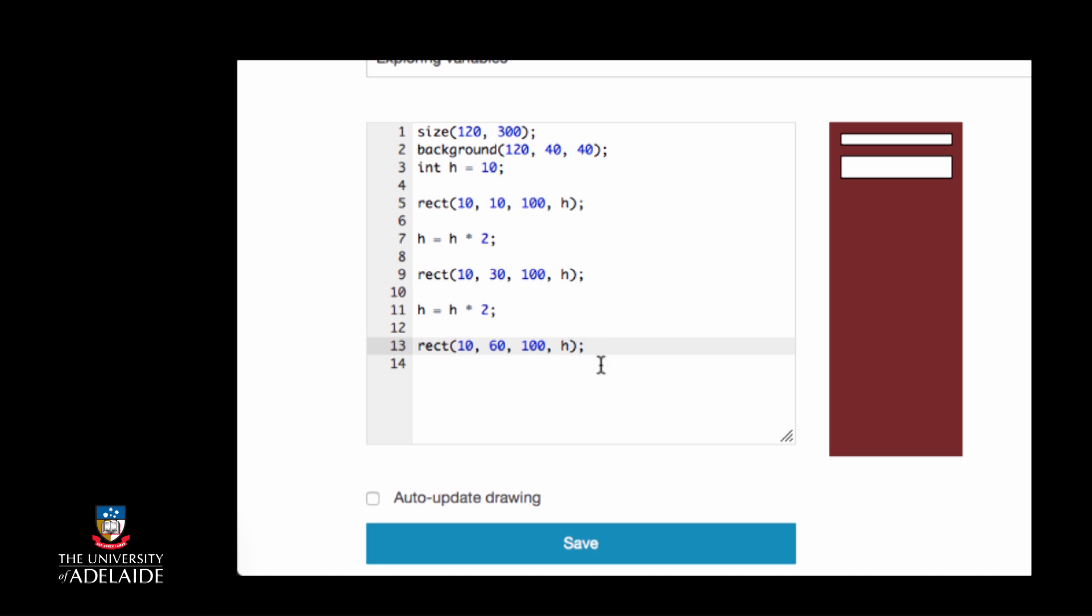When we call the rect function the third time, we then create a rectangle that is 40 pixels high. In summary, each time we update the value of h in this example, what we do is read the current value, multiply that by 2, and then write the new value into the variable location.